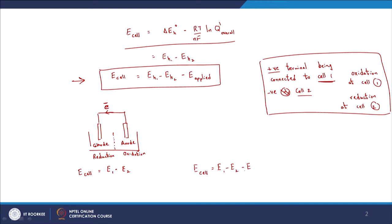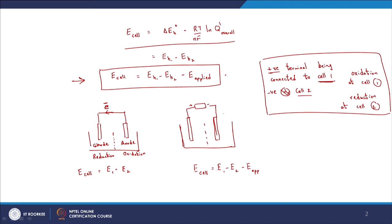Now we are going to consider applying an external potential. Using the symbol with the negative E_applied as we had before, my positive terminal now needs to be connected to cell 1. So I have electrode 1 (cell 1) and cell 2, and I put in my external applied voltage — positive connected to cell 1 and negative connected to cell 2. The way you apply this terminal, you see that electron flow from the negative terminal to cell 2 will be promoted, and electron flow from cell 1 to the positive terminal will also be promoted.